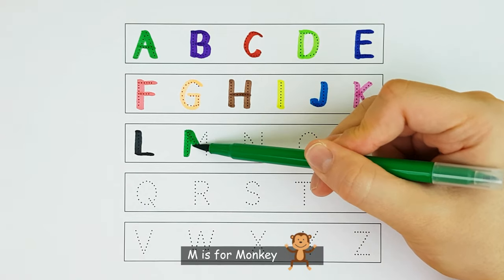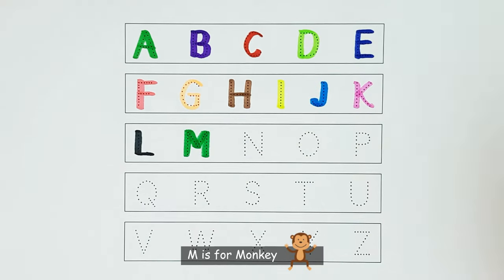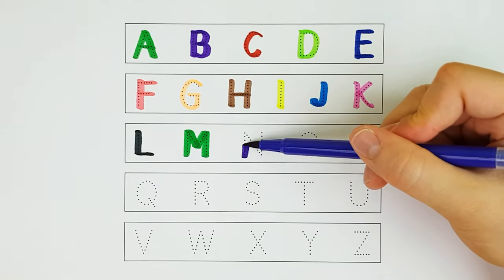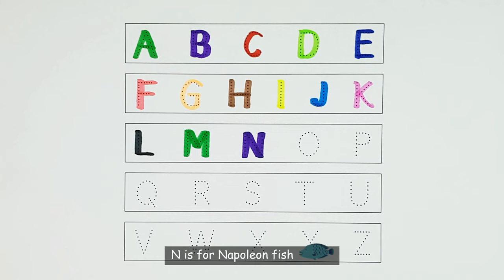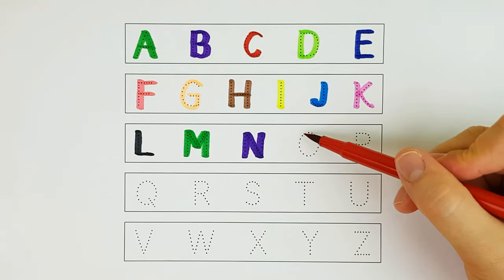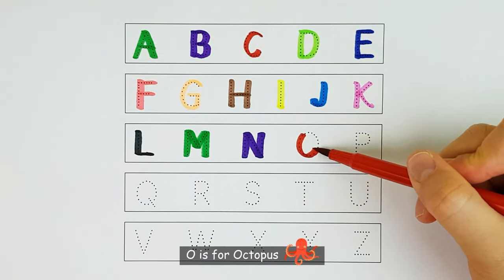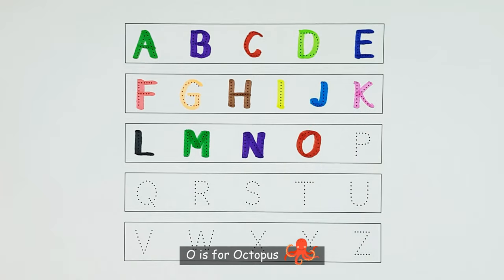M. M is for Monkey. M. N. N is for Napoleon Fish. N. O. O is for Octopus. O.